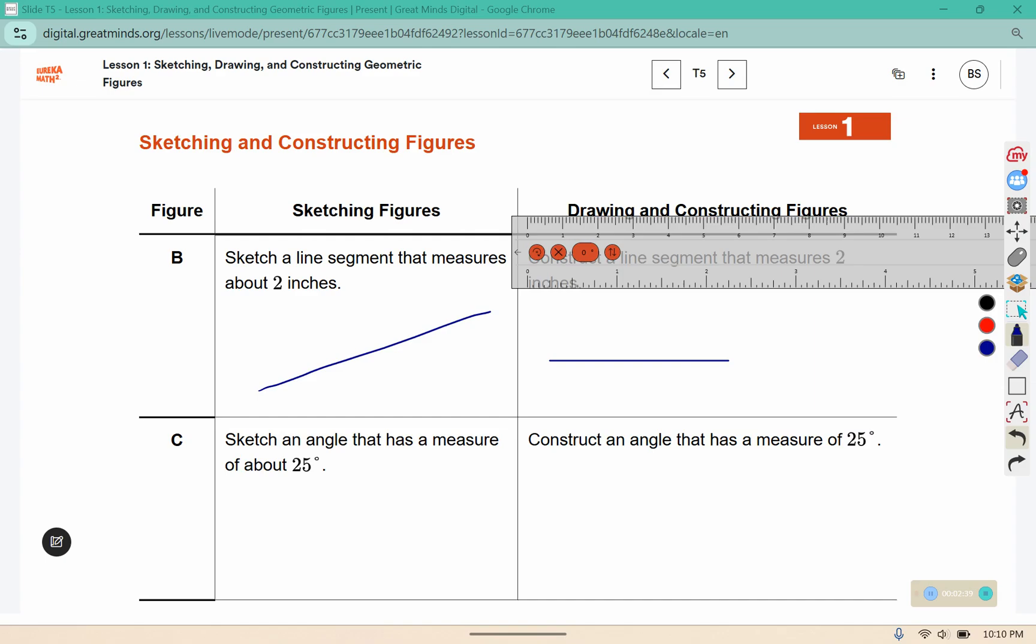Let's sketch an acute angle that has a measure of about 25 degrees. So a 25 degree angle is an acute angle.